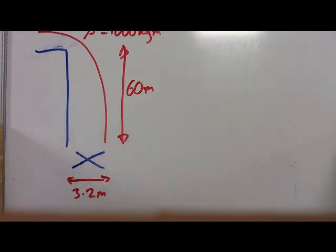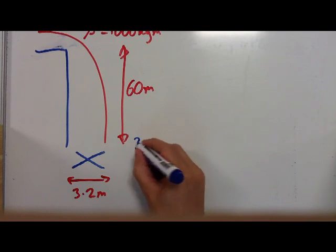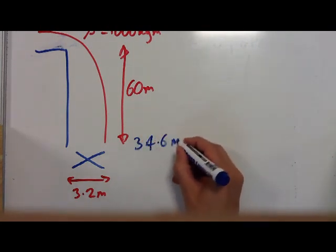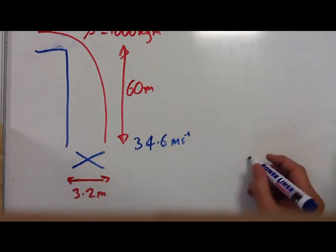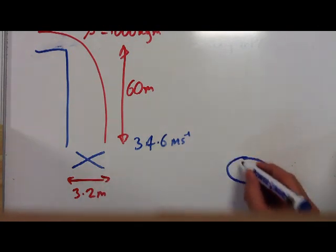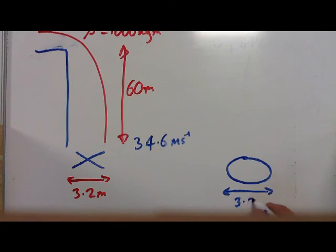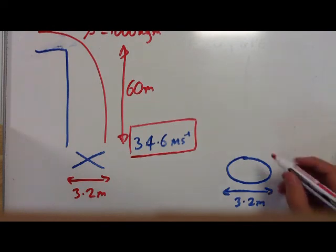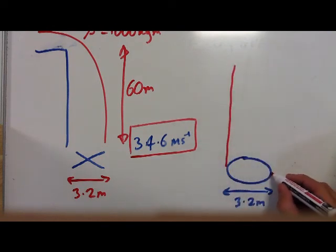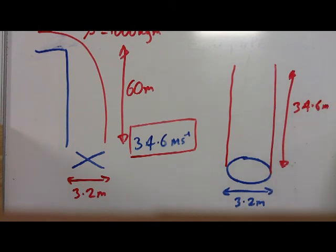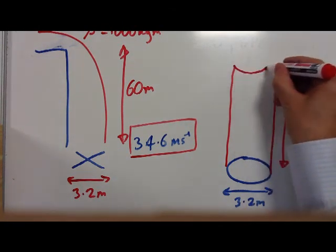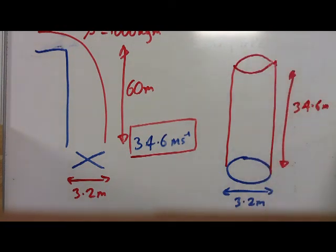The second part of the question asks: what volume of water hits the turbine in one second? We now know the speed of the water as it hits the turbine is 34.6 metres per second. The turbine is circular with a diameter of 3.2 metres. In one second, a column of water 34.6 metres tall will hit that turbine — so we end up with a cylinder of water 34.6 metres tall by 3.2 metres wide.